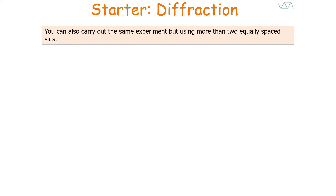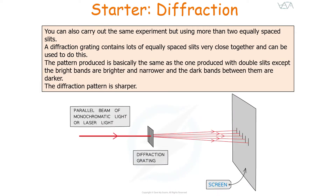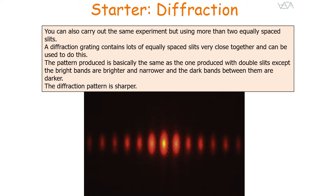You can also carry out the same experiment with more than two equally spaced slits. A diffraction grating contains lots of equally spaced slits very close together and can be used to carry out this investigation. The pattern produced is basically the same as with double slits, except that the bright bands are brighter and narrower, and the dark bands in between are darker — so the diffraction pattern is sharper. As you can see in this image, the bright fringes are brighter, sharper, and more narrow than in a double slit experiment.